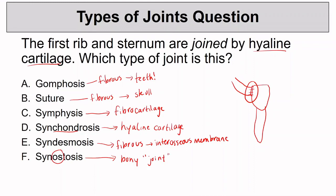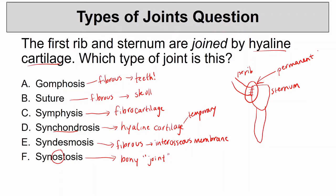It's worth noting that while synchondroses are described as more temporary, the joint between the first rib and the sternum is an exception — it is permanent. It's not a hard and fast rule of primary/secondary or temporary/permanent. What we always look back to is what type of tissue is joining those bones. Thanks for joining me in this video; I'll see you in the next one.